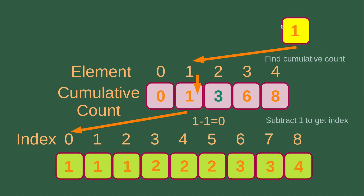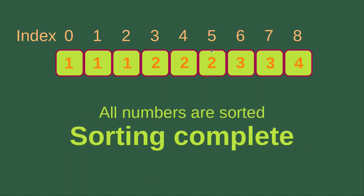Finally, I have the last element to be handled. This element has a cumulative count of 1, and I subtract 1 from 1 to get 0. So index 0 is the correct position of the element from the unsorted list. We can see that all the numbers are already sorted: 3 ones, 3 twos, 2 threes, and 1 four. The sorting process is now complete.